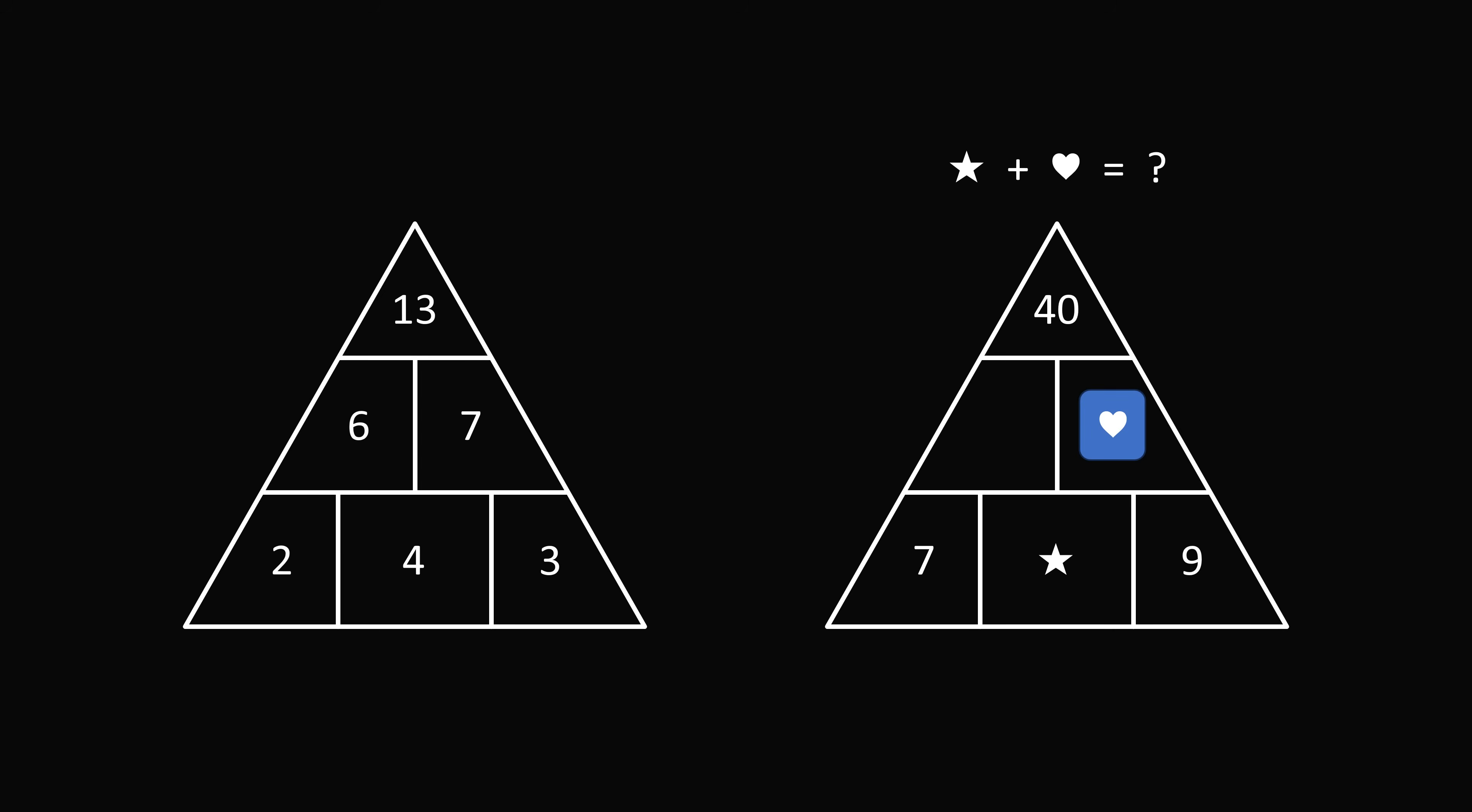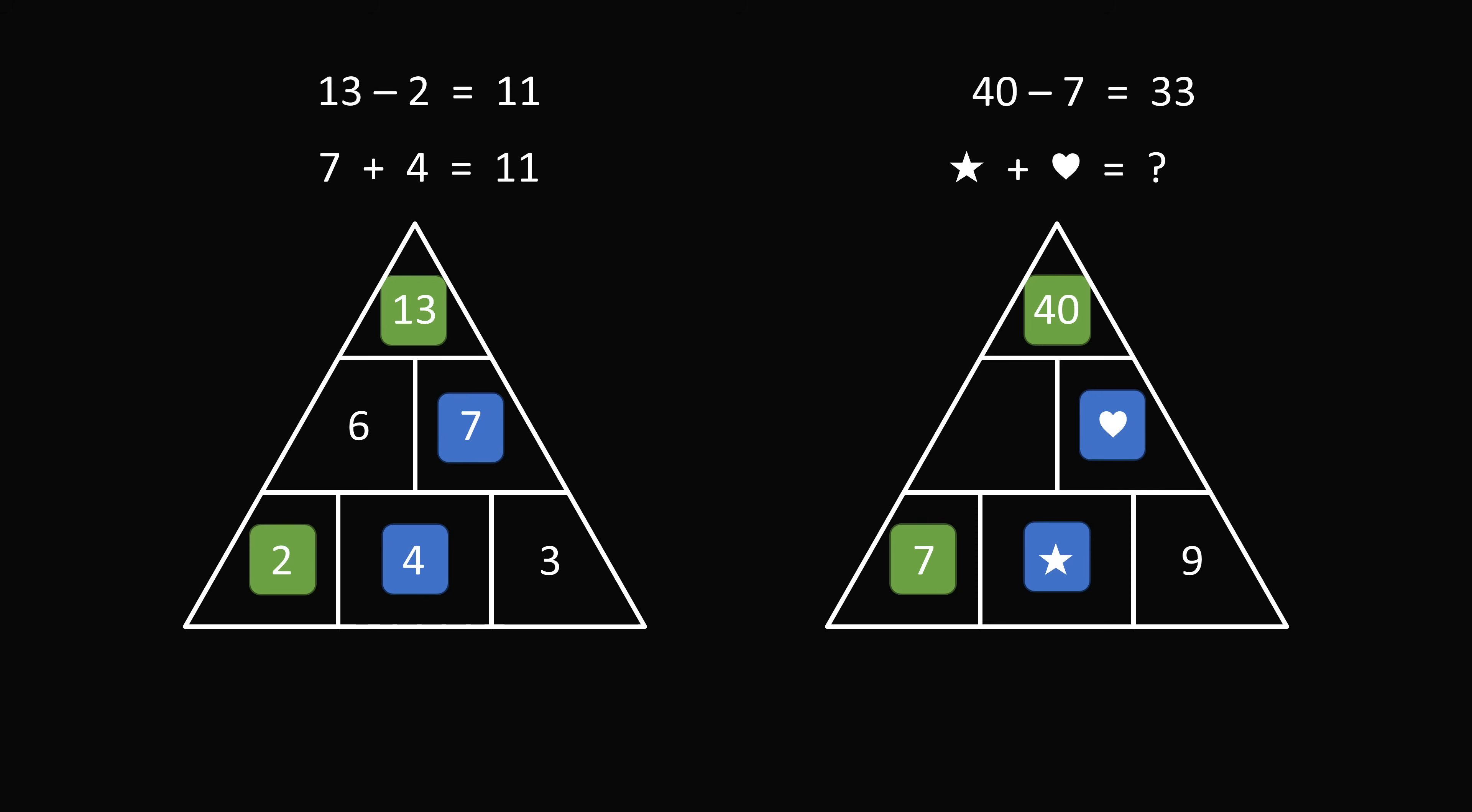So I first looked at the symbol for heart and the symbol for star, and I thought about the corresponding numbers in the first pyramid. This would be 7 and 4. So I looked at these two numbers and I said 7 plus 4 is equal to 11. Is there any other way we could reach this number from the first pyramid? Well, immediately I looked at 13 minus 2. So 13 minus 2 is equal to 11. So according to this pattern, we would take the numbers on this right pyramid, and we would have 40 minus 7, which equals 33.